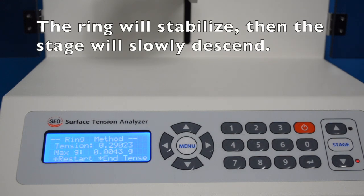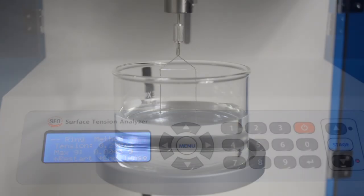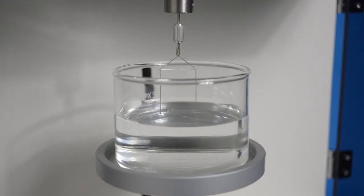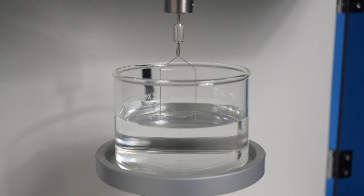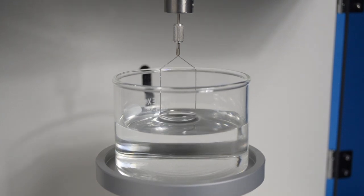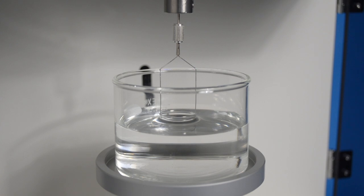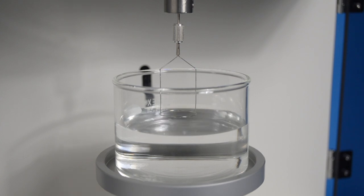And then this process starts of lowering the stage so that the ring approaches the surface. That process continues until the ring pops through the surface, which indicates the end of the test.